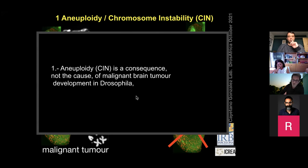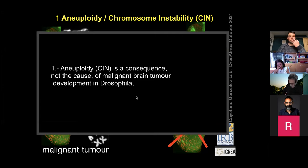The first lesson from our studies is that aneuploidy and chromosome instability in our model system is a consequence, not the cause, of malignant brain tumor development in Drosophila — and this extends to larval discs as well, where we did similar studies to reach the same conclusion.